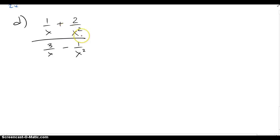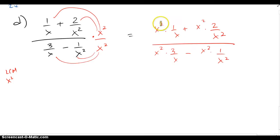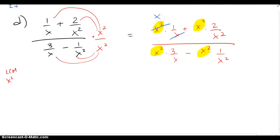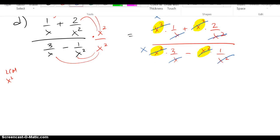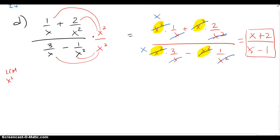I'm going to use Method 2 on this example. The LCM is clearly X squared for all the denominators. The top gets an X squared and the bottom gets an X squared, distributed into each term. After the X-squared cancellations: the first term gives an X, the second term cancels completely giving just a 2, the third term gives an X, and the fourth term cancels completely giving minus 1. So I end up with X plus 2 on top over X minus 1 on the bottom. Both binomials are not factorable further, and I'm done.